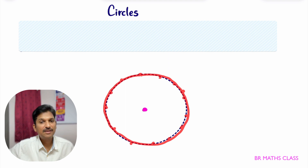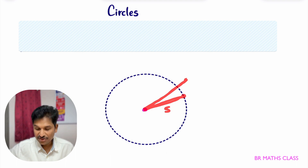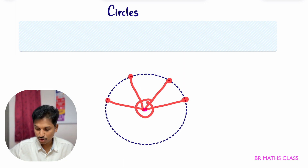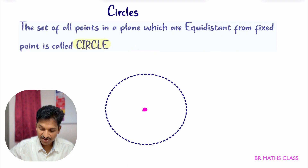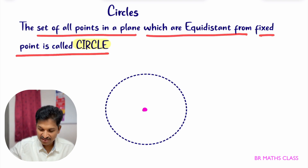What is the definition of circle? Set of all points in a plane which are equidistant from a fixed point. Suppose one point is five units from the center — any other point must also be five units. All points on the circle are equidistant from the fixed point. So the definition of circle is: the set of all points in a plane which are equidistant from a fixed point is called a circle.